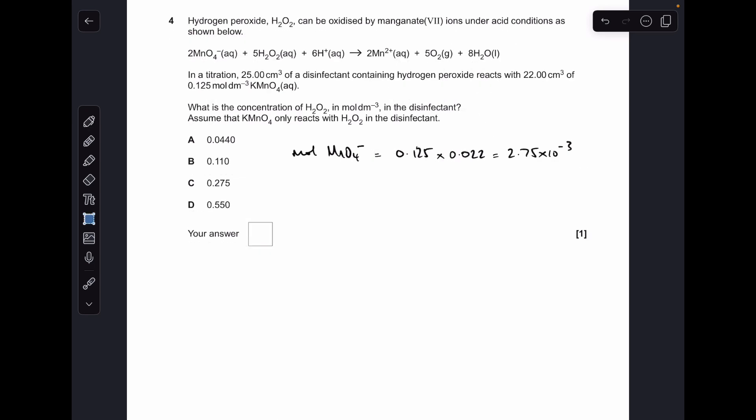Moving on to four. First we calculate the moles of the MnO₄⁻ ion, concentration times volume in dm³, giving 2.75 × 10⁻³. Then we apply the ratio. The moles of hydrogen peroxide is 5 over 2 times the moles of MnO₄⁻. Then the concentration of hydrogen peroxide is the moles divided by its volume, 0.275. Option C.